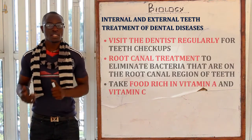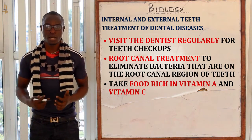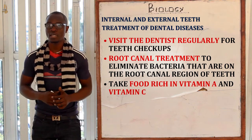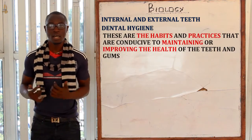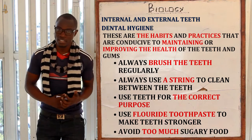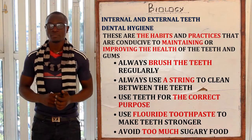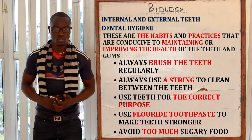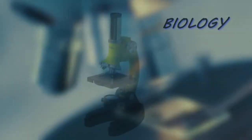Treatments for these diseases include visiting the dentist regularly for a teeth checkup, root canal treatment, and taking foods rich in vitamin A and vitamin C. For dental hygiene, we should brush our teeth regularly, visit the dentist regularly, use teeth only for their correct purpose, and always use fluoride toothpaste as it makes teeth stronger. We'll continue discussing digestion biology in the next class.